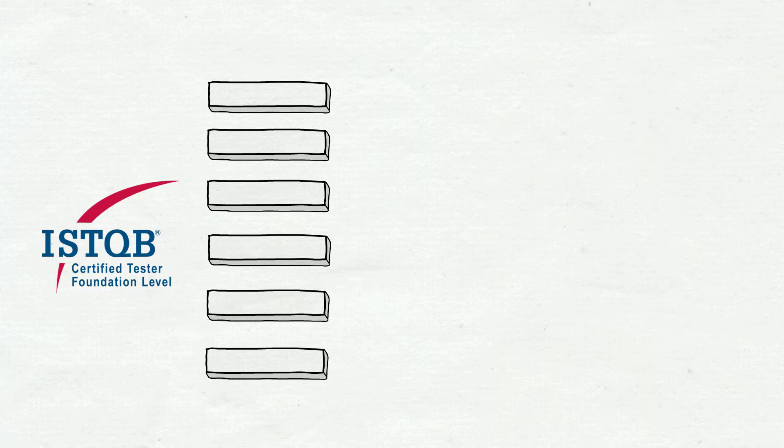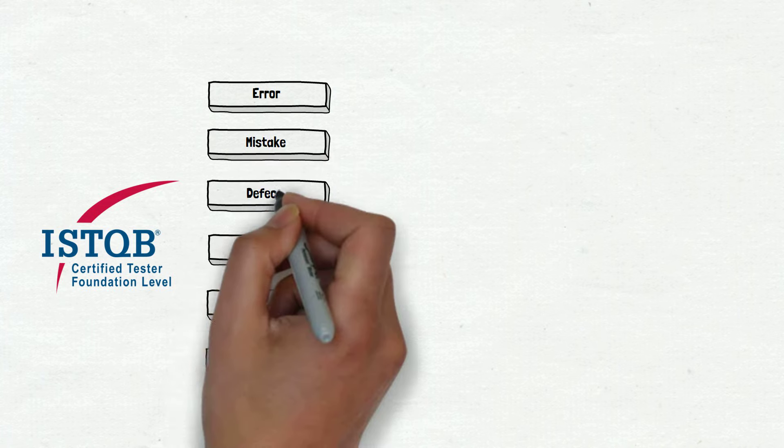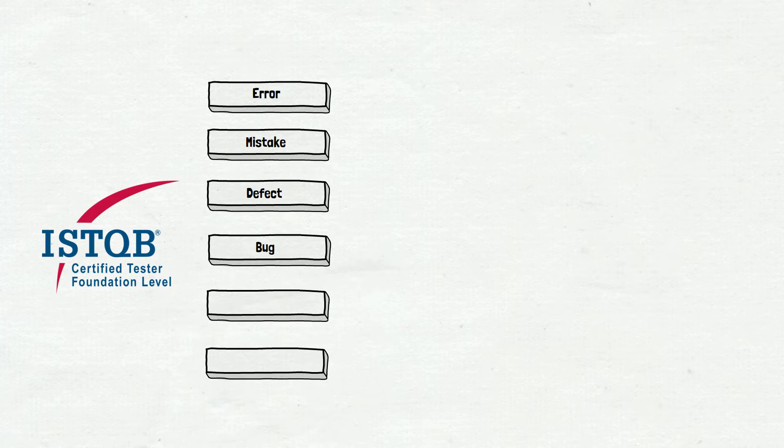There are six words in ISTQB related to our topic: Error, mistake, defect, bug, fault, and failure. We need to understand the difference between those. Let's start with the error.